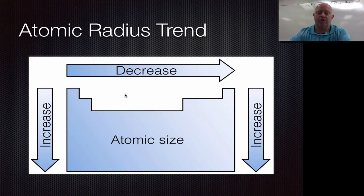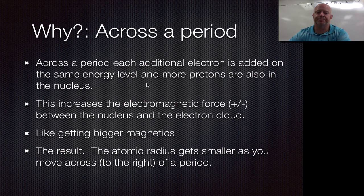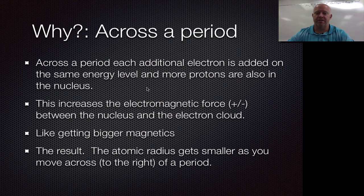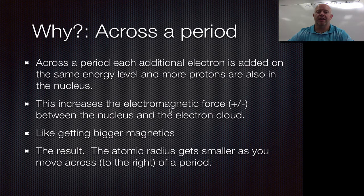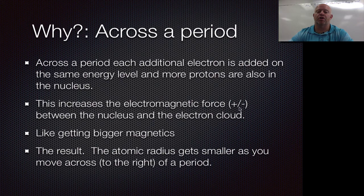Let's talk about why. As you move across a period, you keep adding more and more electrons to that same energy level. Since electrons have a negative charge and protons have a positive charge, adding more protons and more electrons on the same energy level means the attractive electromagnetic force actually causes the electrons to be pulled in tighter to the nucleus — like having bigger and bigger magnets, where the attractive force gets greater and pulls everything in tighter. So as you go left to right, the atom gets smaller due to a stronger electromagnetic force crunching the electron cloud closer to the nucleus.